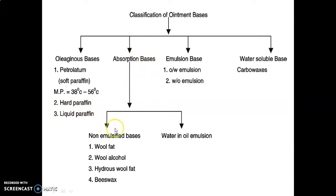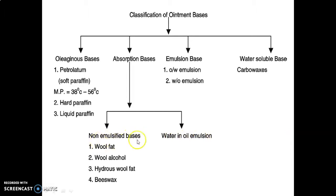Absorption bases are classified into two types: non-emulsified bases and water-in-oil (W/O) emulsion, in which water is the internal phase while oil acts as the external phase. Non-emulsified bases are further of four types, for example: wool fat, wool alcohol, hydrous wool fat, and beeswax.